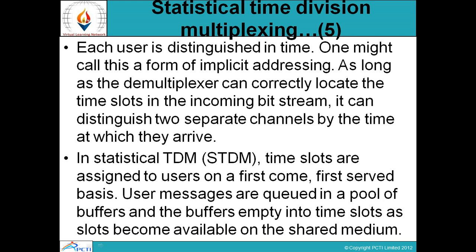This process is called implicit addressing. As long as the demultiplexer can correctly locate the time slots in the incoming bit stream, it can distinguish two separate channels by the time at which they arrive. इस process के through हम different channels को time के base पर identify कर सकते हैं।